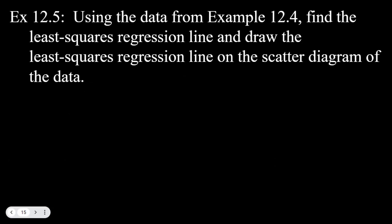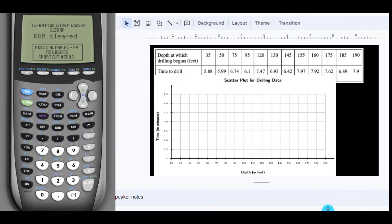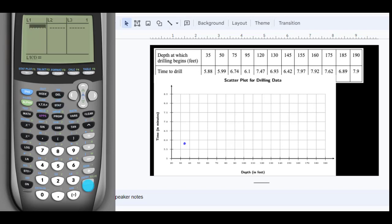For example 12.5, using the data from example 12.4, we find the least squares regression line and draw it on the scatter diagram. We go to STAT, then EDIT, and put the values into our lists. The first list — the depth as drilling begins — goes in L1.